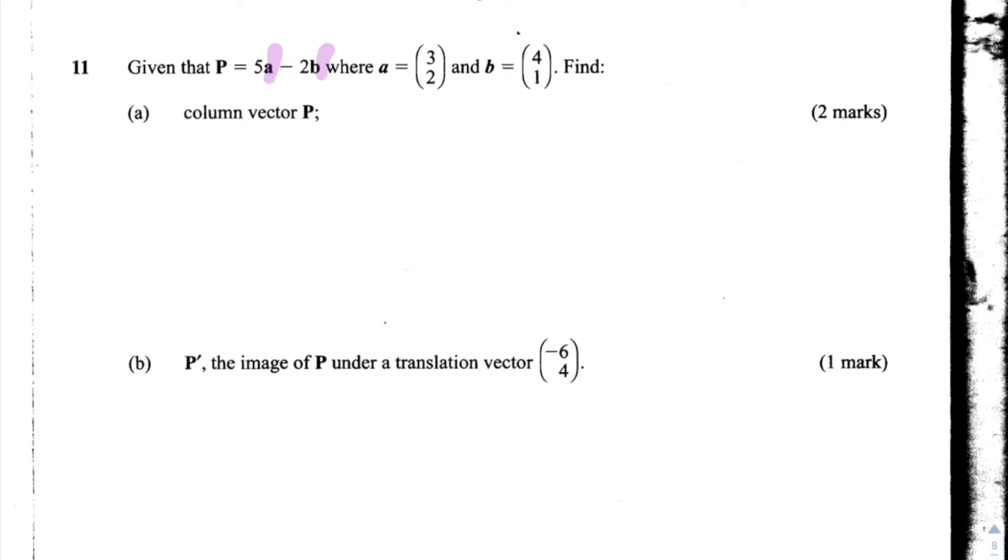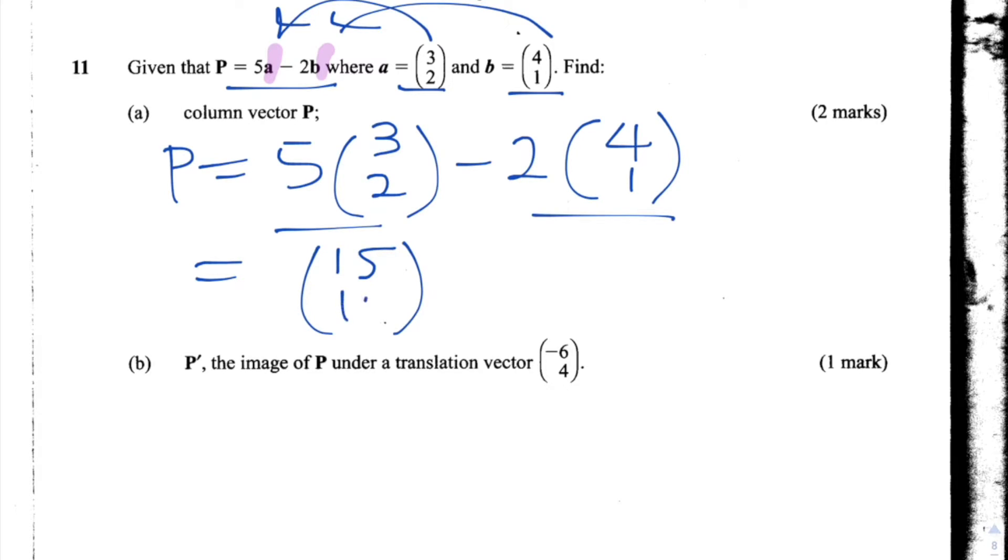So what we're going to do is we've been given an expression here for P in terms of A and B, and we're told what both A and B are. So we substitute for A and B in this equation here. So we'd write P as 5 times (3, 2) minus 2 times (4, 1). And so let's handle these separately. When we times 5 by this vector, we get 5 times 3 which is 15, and 5 times 2 which is 10. Minus 2 times 4 is 8, and 2 times 1 is 2. And then 15 minus 8 is 7, and 10 minus 2 is 8. So the answer is (7, 8), so 7 in the x direction and 8 in the y.